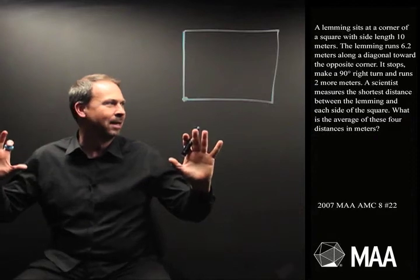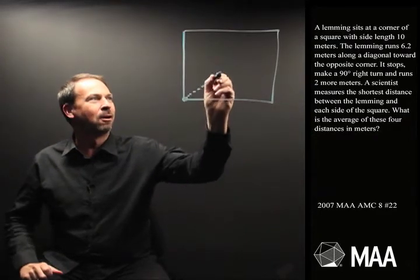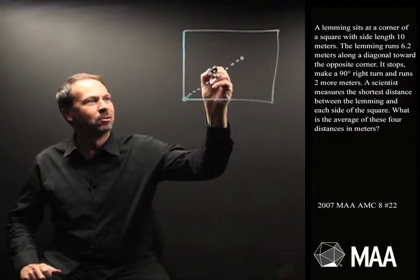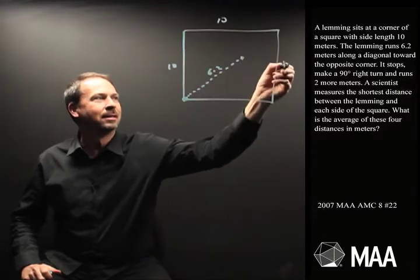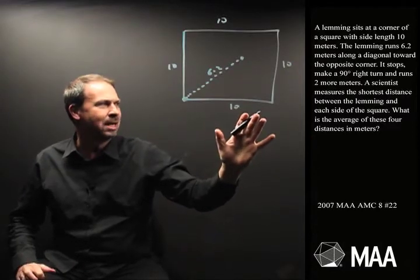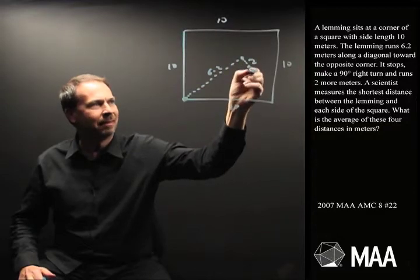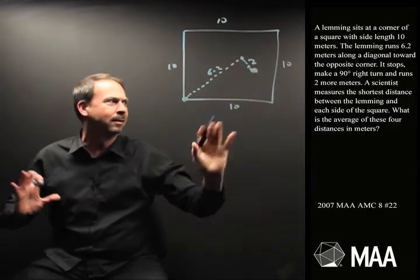Hang on, I'm confused already. It's in the corner. It runs 6.2 metres off to the opposite corner. So 6.2 metres. This is 10, 10, 10 and 10. Stops, makes a 90 degree right turn and runs two more metres. So 90 degree turn and runs two more metres. So something like that. It's a very rough picture.